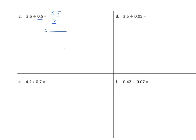I'd like to change that to a whole number. If I have 5 tenths and I multiply it by 10 — I have one decimal place, so I need to multiply it by 10. And whatever I do to the denominator, I need to do to the numerator. So 3 and 5 tenths times 10 is 35, and 5 tenths times 10 is 5. We have a very familiar basic division problem: 35 divided by 5 equals 7.